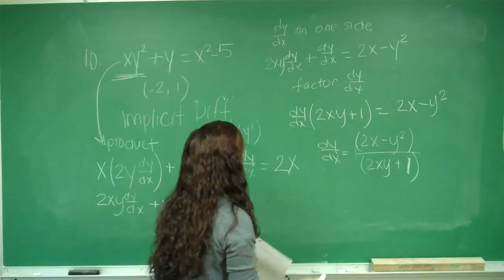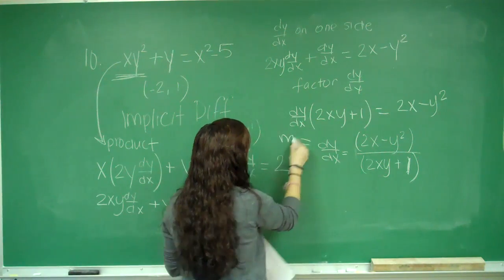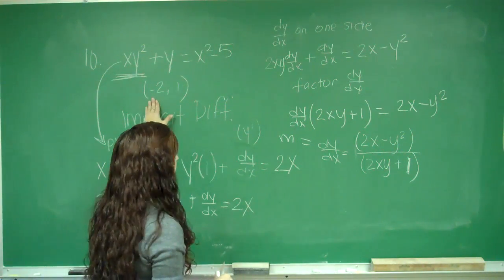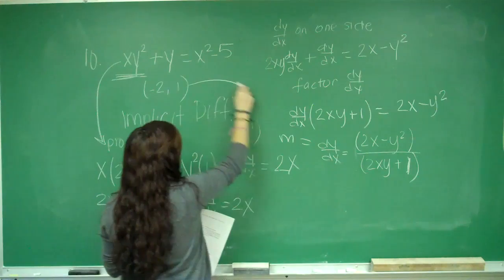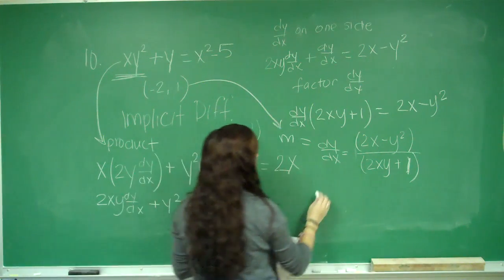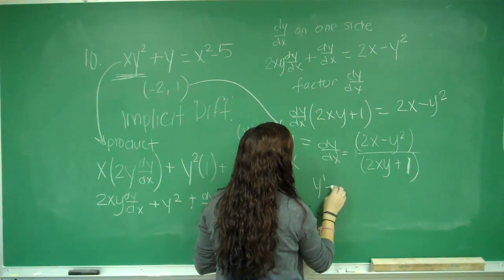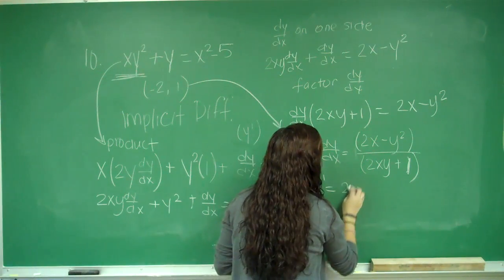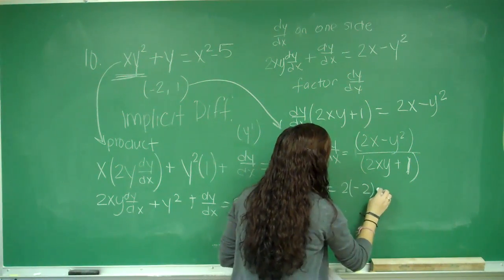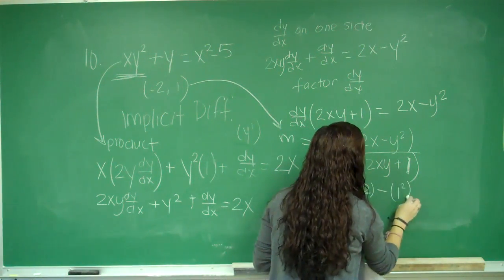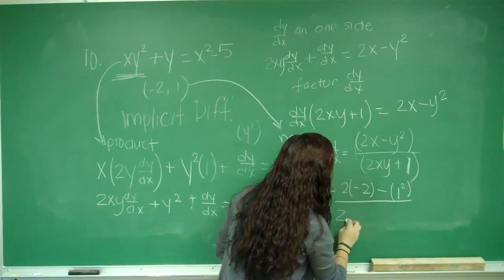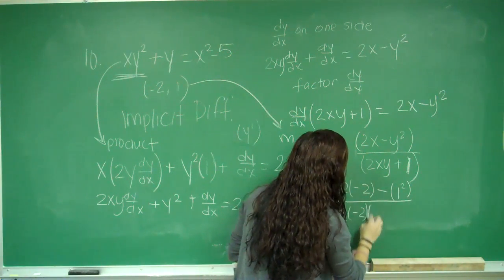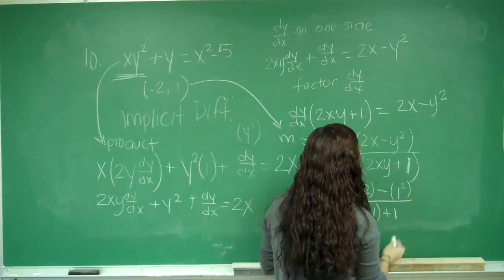So this is equal to my slope. Now all I have to do is plug my point in from here. So I'll have y' equals my x is -2, so I have 2 times -2, minus 1², all over 2 times -2, times 1, plus 1.